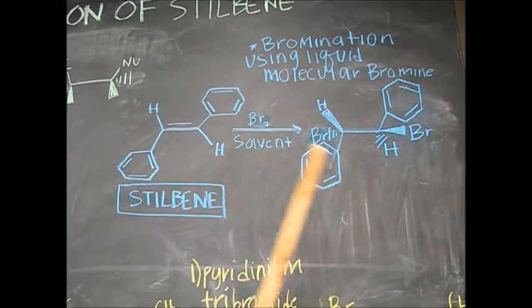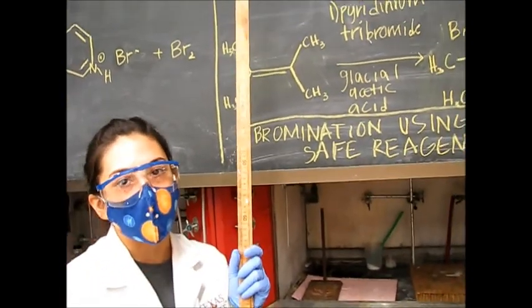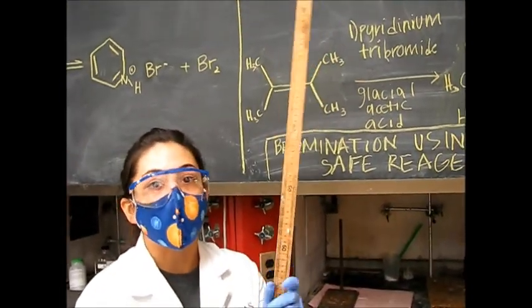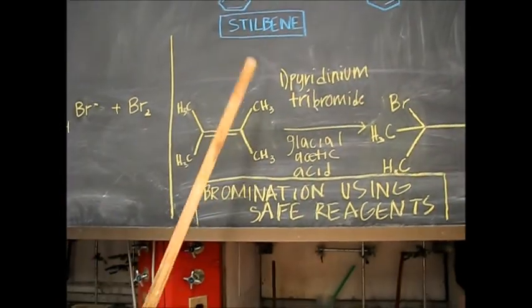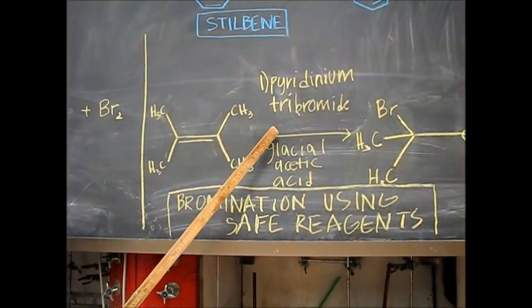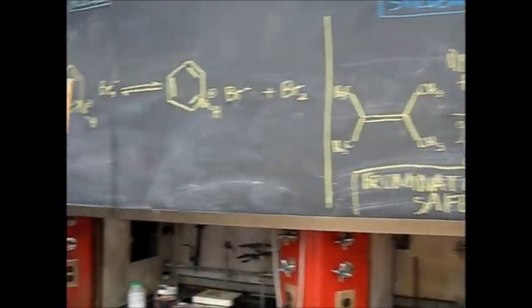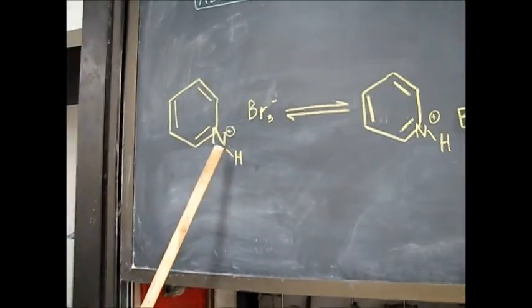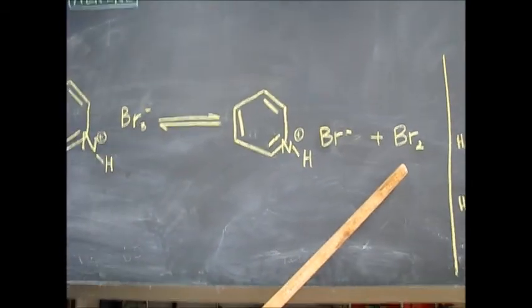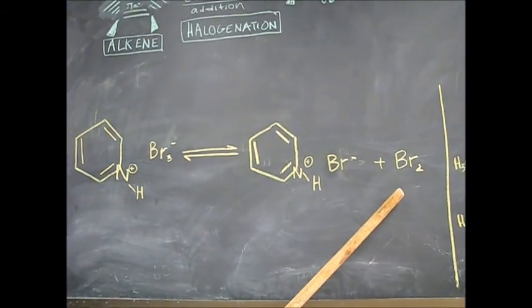And so this bromine is actually extremely hazardous. It's carcinogenic, produces vapors, and is very unstable. So we're going to be using safe reagents in this lab, the safe reagents being pyridinium tribromide, and our solvent's going to be glacial acetic acid. Pyridinium tribromide will interact with Br3 and produce Br2, which will be used in the reaction itself.